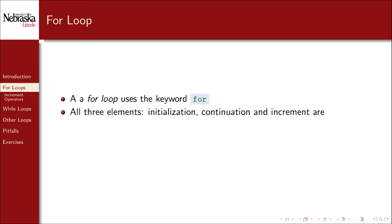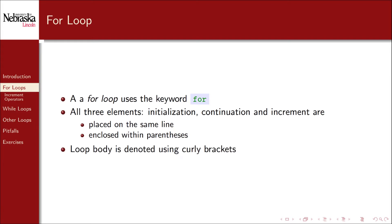The three main elements — the initialization, continuation, and increment — are all conveniently placed in the same line and enclosed with parentheses. The final element, the loop body, is placed immediately after and enclosed in curly brackets, just as with conditional statements.